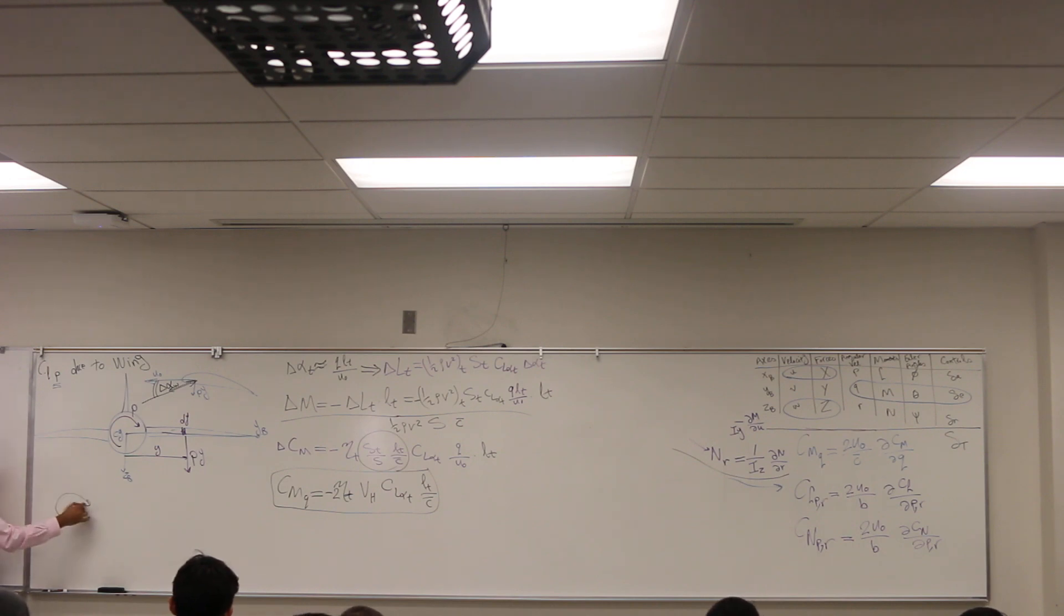This point, you have a tangential velocity, right? How much? Well, it's omega times the radius. Correct? Omega. The same here.